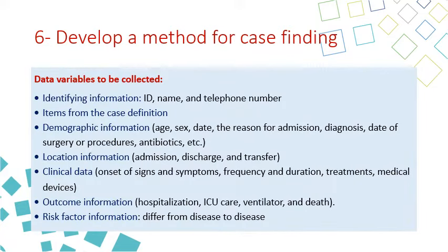The data variables to be collected include: identifying information such as ID, name, and telephone number; items from the case definition; demographic information — age, sex, date, reason for admission, diagnosis, date of surgery or procedure, antibiotics; location information — admission, discharge, and transfer dates; clinical data — signs and symptoms, frequency and duration; treatments; medical devices; outcomes — hospitalization, ICU care, ventilator use, and death; and risk factor information, which varies from disease to disease.